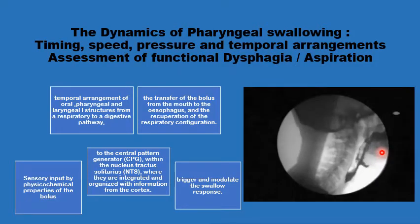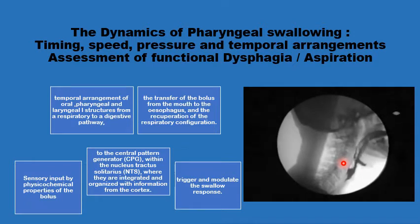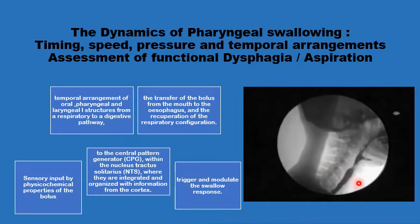Understanding the dynamics of pharyngeal swallowing involves the study of the timing, the speed, the pressure generated, and the temporal arrangement of various structures in the oral cavity, including the tongue and the palate, the larynx, the pharynx, and other structures in the neck or the chest as well. All these actions are very finely tuned centrally by the CNS after receiving appropriate sensory input about the physical and chemical properties of the bolus, and is translated into actions in the various organs involved in pharyngeal swallowing.